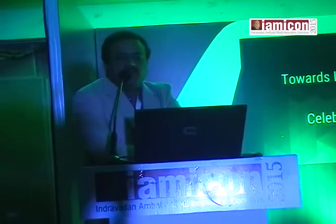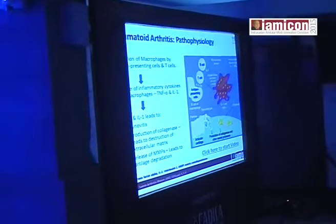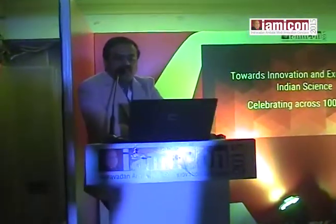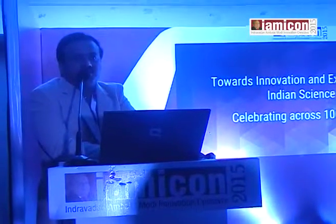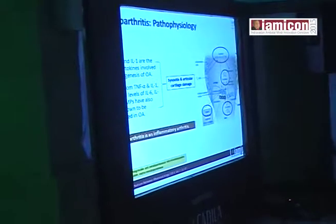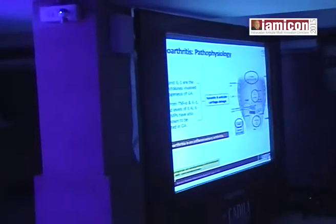As everyone knows about rheumatoid arthritis, I don't think it needs any explanation. In terms of pathophysiology, there will be a release of inflammatory cytokines from the macrophages — that is tumor necrosis factor, TNF-alpha — which leads to synoviocyte activation, production of collagenase, and destruction of the extracellular matrix. There is also release of MMPs, that is matrix metalloprotease, which leads to cartilage destruction and degeneration. There will also be release of TNF-alpha and interleukins, leading to synoviocyte activation and articular cartilage damage.